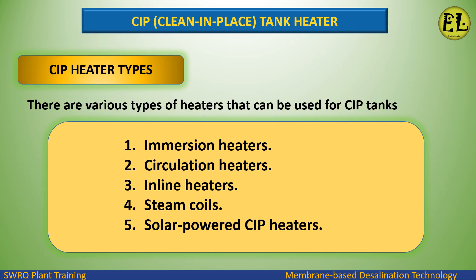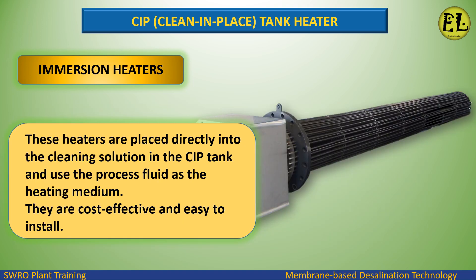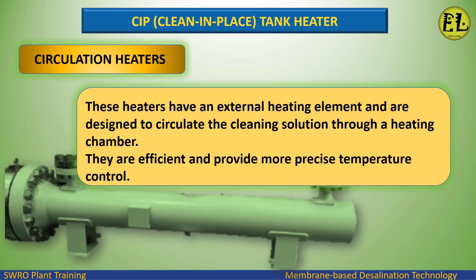There are various types of heaters that can be used for CIP tanks: immersion heaters, circulation heaters, inline heaters, steam coils, and solar-powered CIP heaters. Immersion heaters are placed directly into the cleaning solution in the CIP tank and use the process fluid as the heating medium — they are cost-effective and easy to install. Circulation heaters have an external heating element designed to circulate the cleaning solution through a heating chamber, providing more precise temperature control.